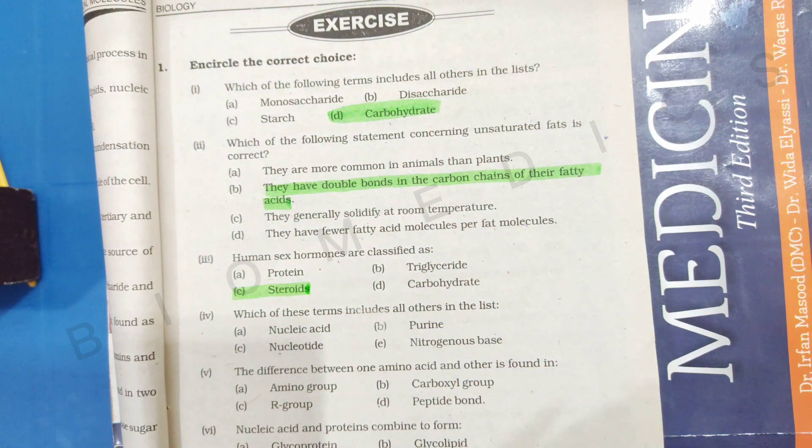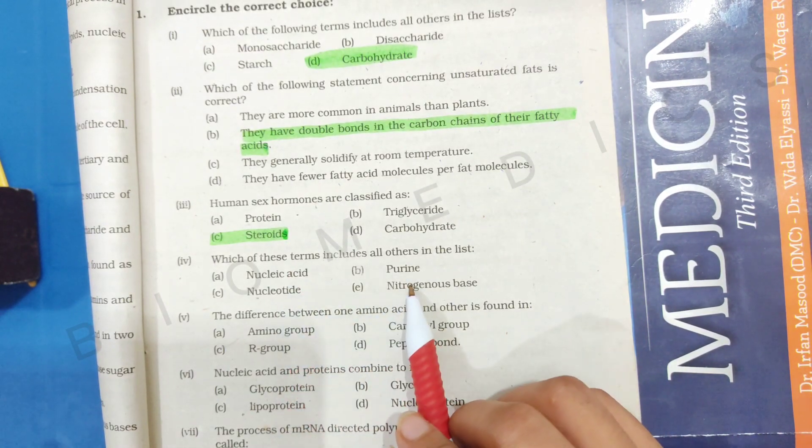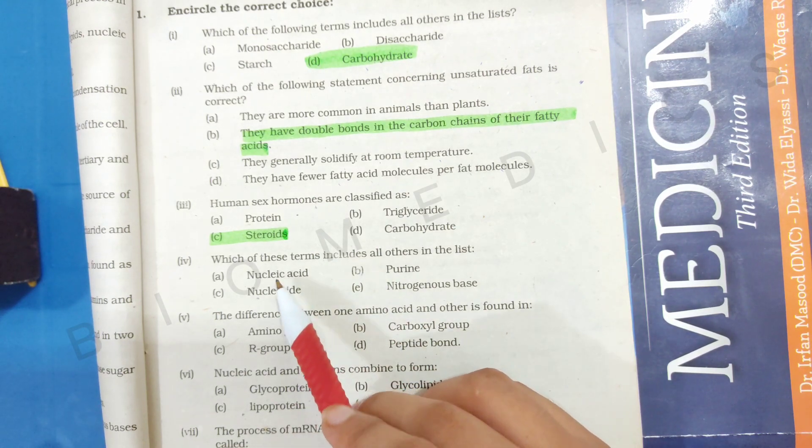Which of the following terms includes all others in the list? Now, which are included in your body? One is nucleic acid, purine, nucleotide, and nitrogenous base. Now you need to know that nucleic acid is called a polymer of nucleotides.